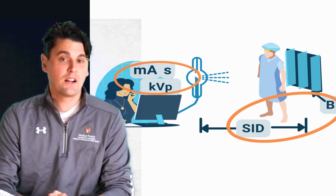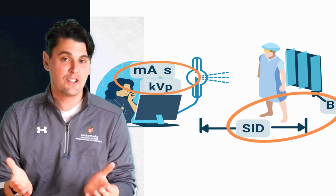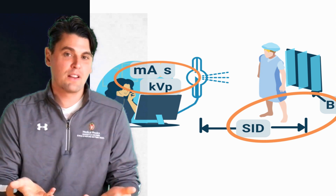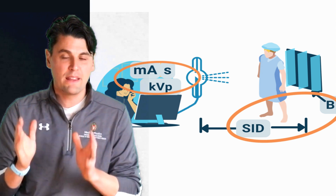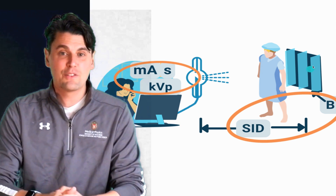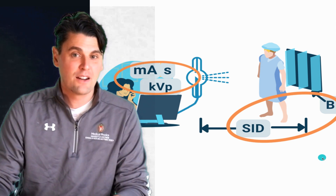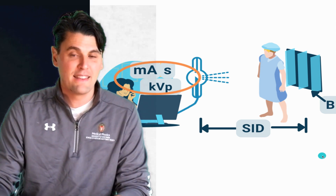We can remember they go together because they're both things that happen in the room. They also are going to go together in terms of directionality when we look at the relationship between these parameters and the exposure — or the intensity of x-rays being measured on the image receptor.